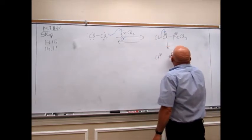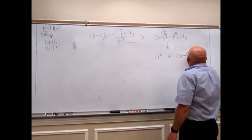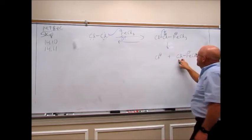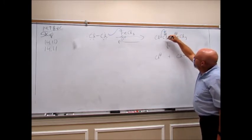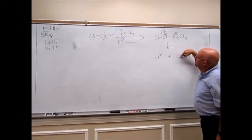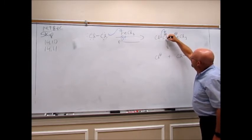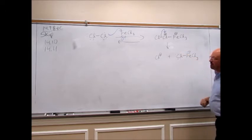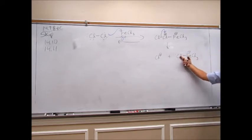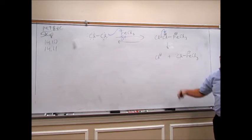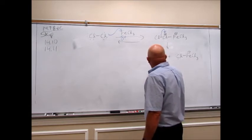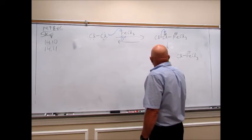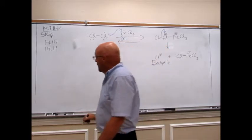If we break the chlorine-chlorine bond, we take those electrons up to the plus charge and we get a chlorine cation. The other chlorine is now back to neutral — it had two lone pairs, now it has three lone pairs. That chlorine cation with a full plus charge is our electrophile. This is what is going to force the benzene to react.